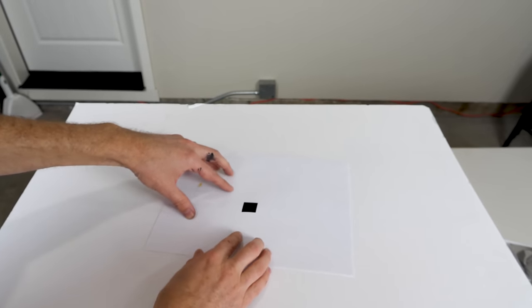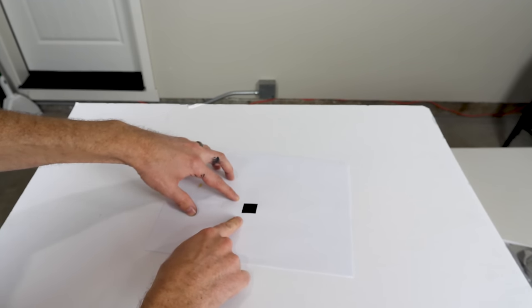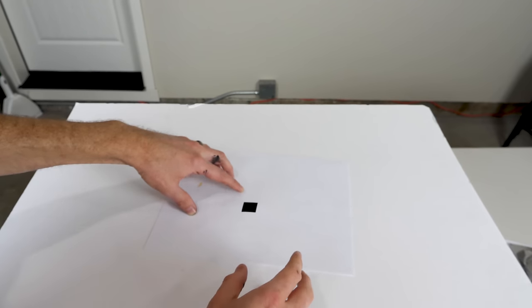And so that's exactly what I did here. So what this is is it's actually a hole that's going into a box that's painted with black 2.0 inside the big box.